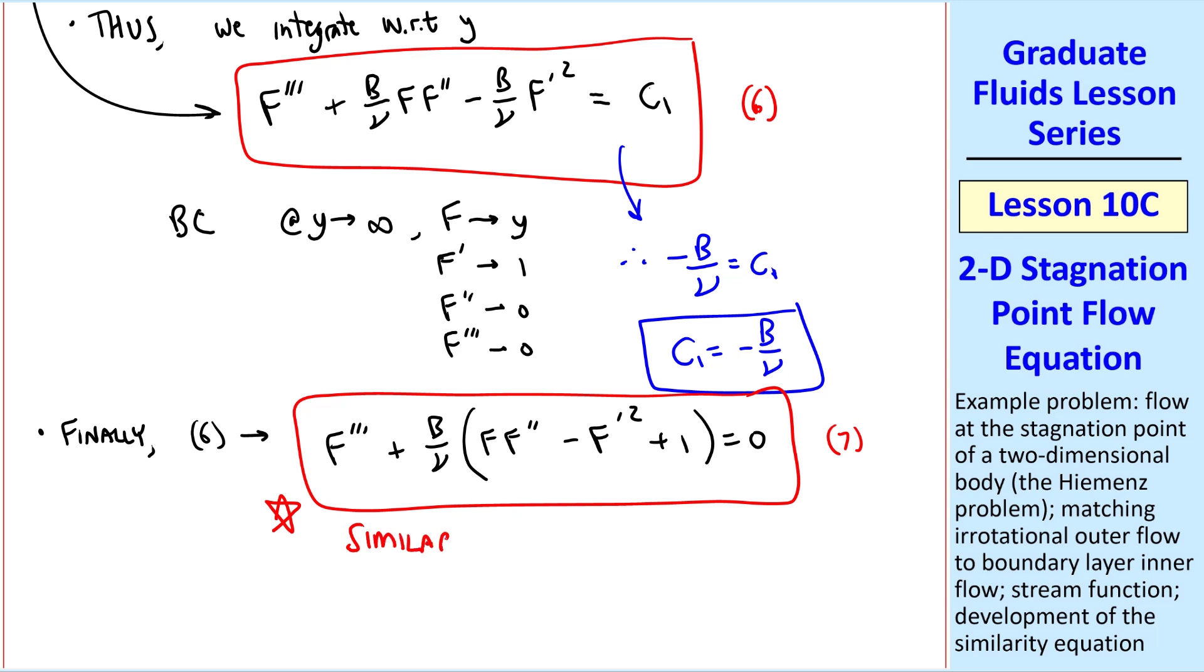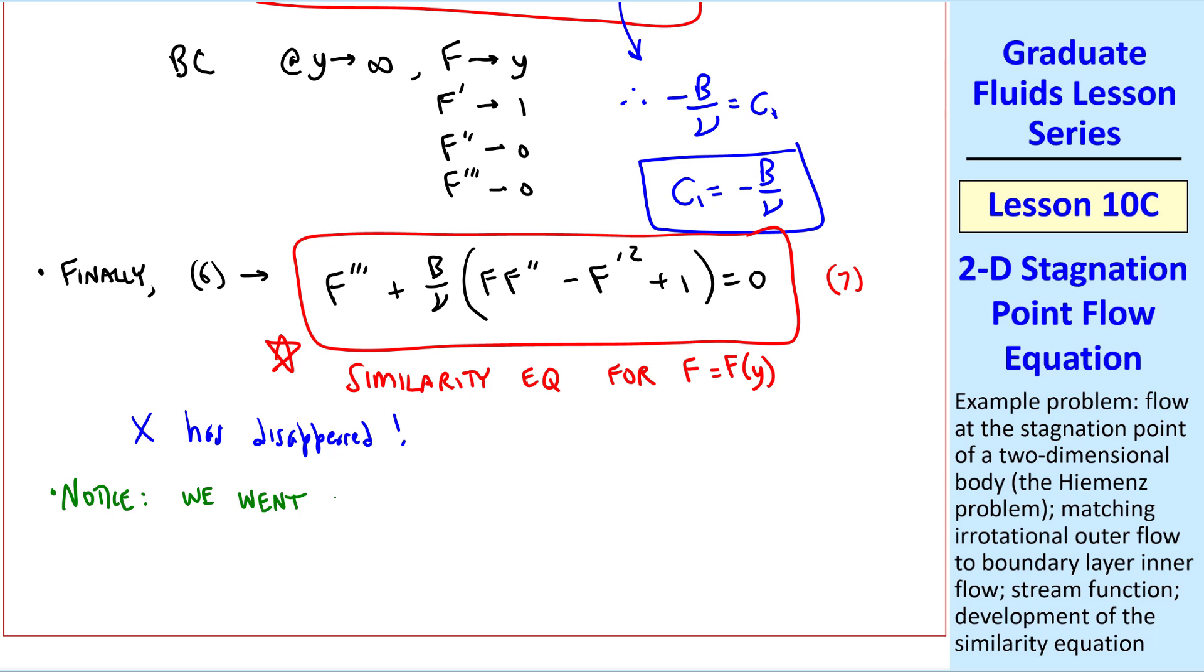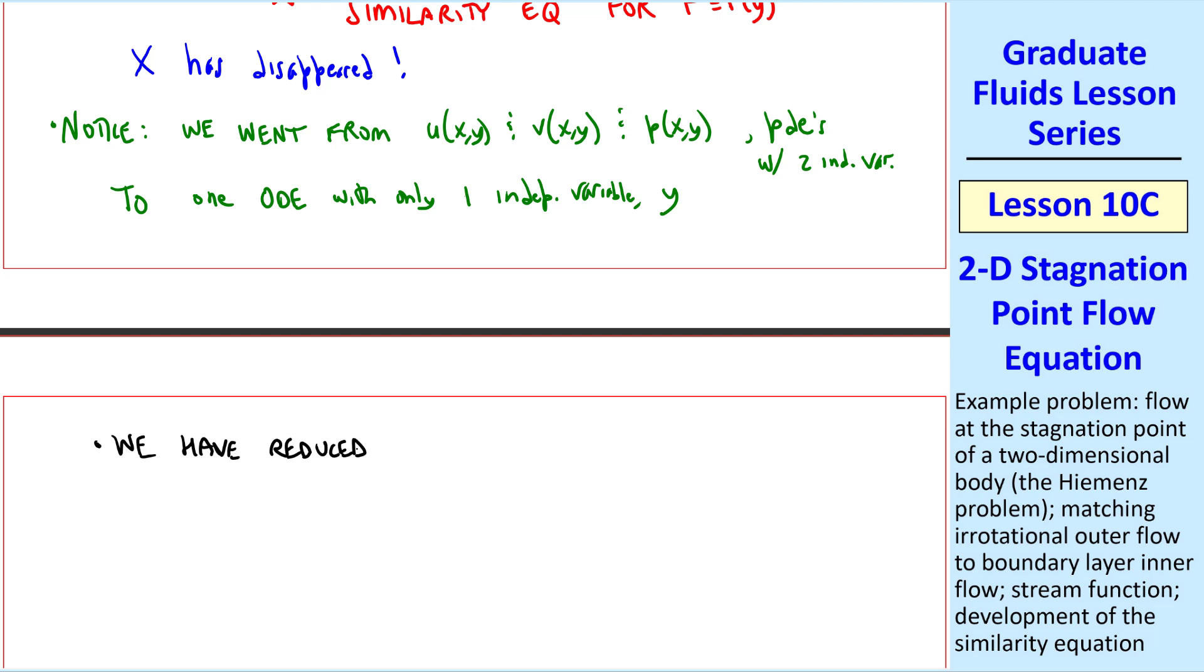It's a little different from our previous ones because we didn't define an eta. Here instead we have f is a function of y. Coordinate x has disappeared from the problem. We now have an ODE for f as a function of y. Why is this a similarity equation? Because we went from u as a function of x and y, and v as a function of x and y, and actually pressure also, where we had PDEs with two independent variables, x and y, we went from that to one ODE with only one independent variable, namely y. If you go back and recall our definition of similarity, we said that we had to reduce the number of independent variables by at least one. Here we've reduced the number of independent variables from two to one, namely from x, y to y. Therefore we can say that Hiemenz's assumption has achieved similarity in the equation.